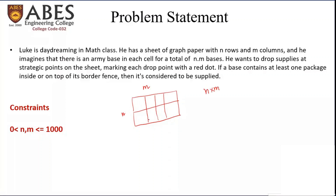We have been given a piece of paper representing the army bases, divided into cells with N rows and M columns, giving N×M different army bases. On these army bases we have to provide strategic supplies — feeding items supplied such that the minimum number of supplies are provided and the maximum number of army bases are fed.